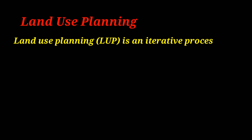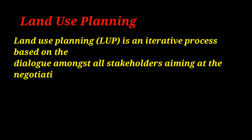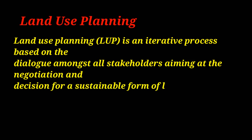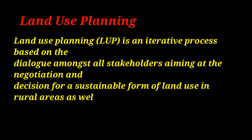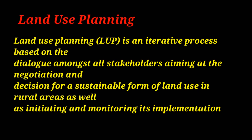First of all, we have the land use planning definition. Land use planning is an iterative process based on dialogue among stakeholders, aiming at the negotiation and decision for a sustainable form of land use in rural areas, as well as initiating and monitoring its implementation. Land use planning is an iterative process — it is a process that is repeated after some time. The plan is mostly about 20 to 25 years.